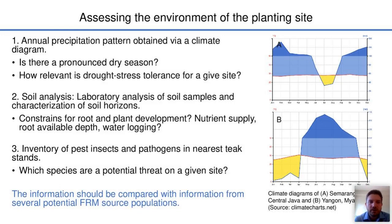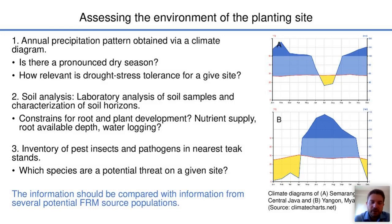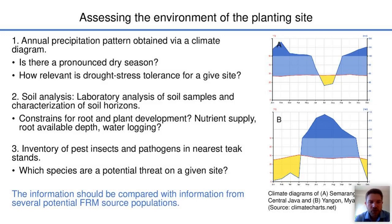Soil analysis would also be important, including a laboratory analysis of soil samples and a characterization of soil horizons. Key questions include: what are the constraints for root and plant development in the soil, how is the nutrient supply, what is the root-available depth, and does waterlogging occur? Also, if teak is already growing in the area where I want to plant, are there any pest insects or pathogens near the teak stands — what potential threats do I have to expect? This information — and it is not a complete list — should be compared with information from several potential sources of forest reproductive material.